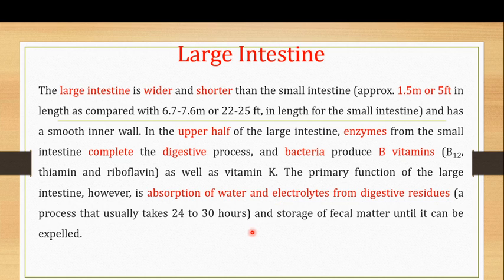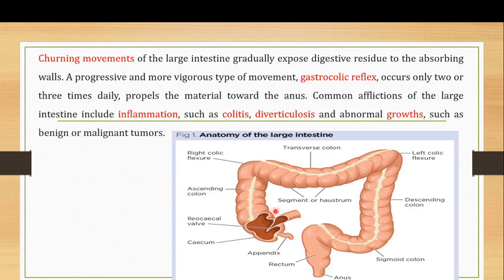The large intestine is also responsible for the storage of fecal matter, which is then expelled from the body. Looking at the anatomy of the large intestine, you have the ascending colon and the descending colon. Food moves in a particular direction, reaching the rectum and then being expelled from the body through the anus.